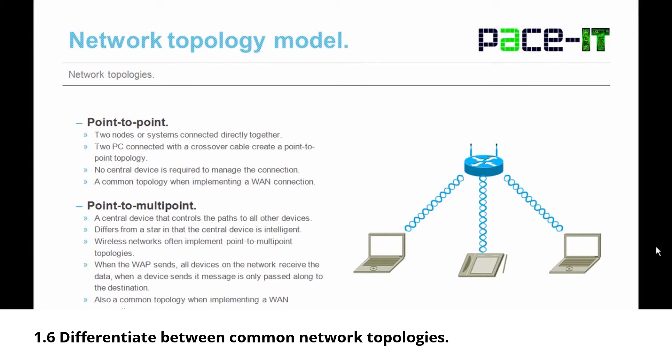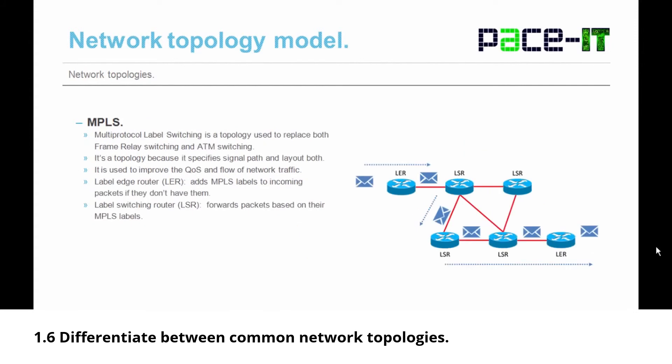We also need to discuss point-to-multipoint. In a point-to-multipoint topology, a central device controls the paths to all other devices. This differs from a star in that the central device is intelligent. Wireless networks often implement point-to-multipoint topologies — when the wireless access point sends, all devices on the network receive the data, but when a device sends, its message is only passed along to the destination. It's also a common topology when implementing a WAN across a packet-switched network.